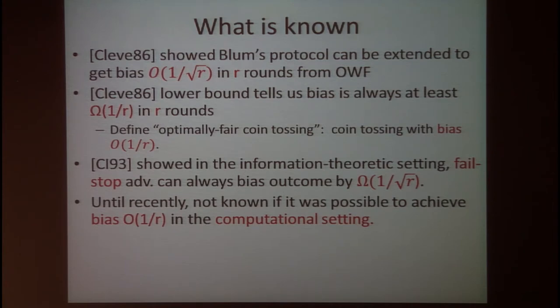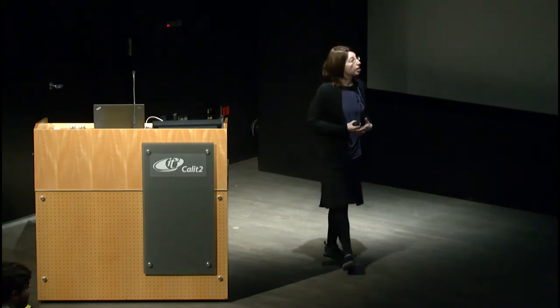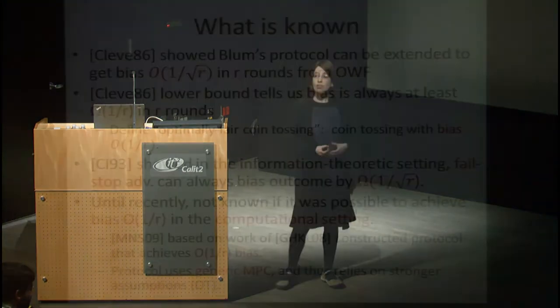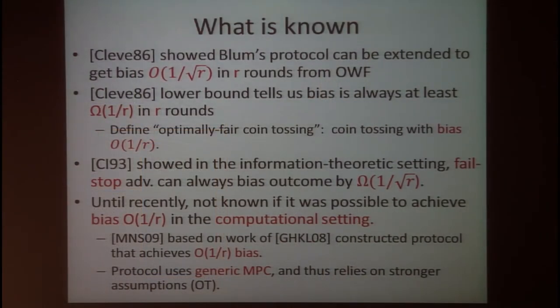Until recently, it was unknown whether it was possible to achieve the optimal bias of one over r in the computational setting. Moran et al. very surprisingly constructed a protocol achieving this optimal one-over-r bias, but their protocol uses generic multi-party computation techniques and relies on stronger assumptions than one-way functions — in particular, they require oblivious transfer.